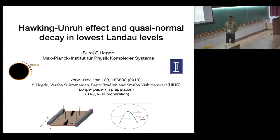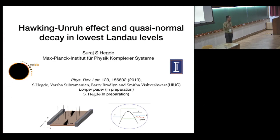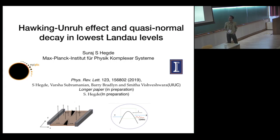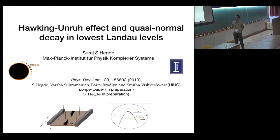First of all, I would like to thank the organizers for giving me this opportunity. It's a great pleasure to be here. I remember as an undergrad doing engineering and trying to get into physics, I used to attend some of the initial ICTS summer schools, particularly the International School on Topology and Quantum Matter many years ago. So it's a great pleasure to come back here and give a talk. I'll be talking about the Hawking-Unruh effect and Quasi-Normal Decay in Lowest Landau Levels. This is work I did when I was at the University of Illinois in Smita's group, and currently I'm a postdoc at Max Planck Institute.